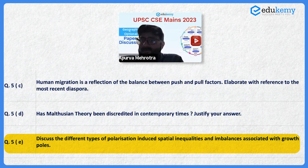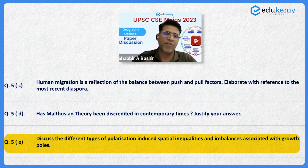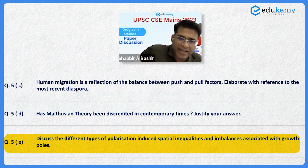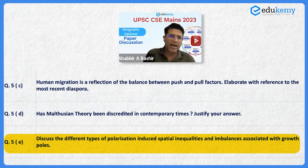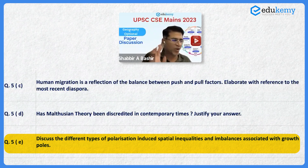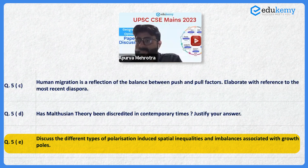Urban agglomerations are also one type of polarization, where some centers become urban areas and there is a huge difference between urban, rural, and suburban areas.